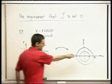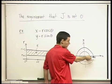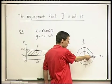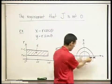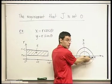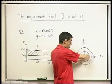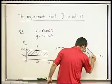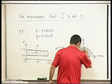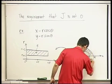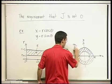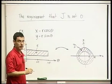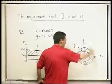What about the thetas? The thetas measure the angle to the positive x-axis. The thetas are between 0 and 4 pi. So we're going to get this entire ring. This is the corresponding domain D. But this is a very misleading picture, because we're getting this ring wrapped around itself twice.